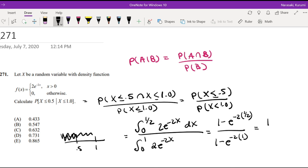So this is equal to 1 minus e to the negative 1 divided by 1 minus e to the negative 2. Let me plug into my calculator real quick. This is equal to 0.731, which is equal to d.